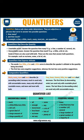Some quantifiers are used with both countable and uncountable nouns — these are the ones that answer both questions — for example: no, none, some, a lot of, etc.